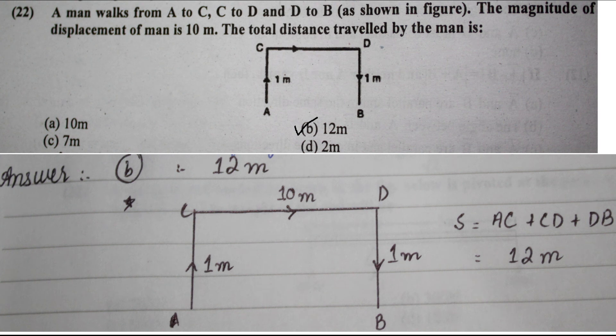Next question: a man walks from A to C, C to D, and D to B as shown in the figure. The magnitude of displacement is 10 meters. To find total distance: from A to C is 1 meter, C to D is 10 meters, and D to B is 1 meter. Adding them gives a total distance of 12 meters, which is option B.